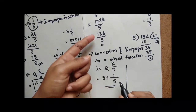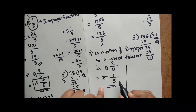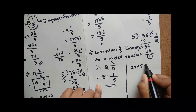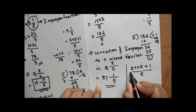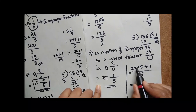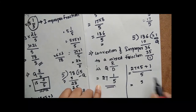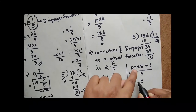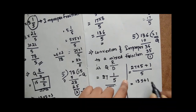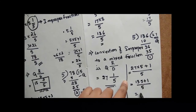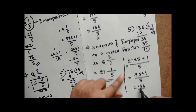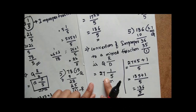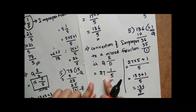I am verifying this answer is correct. 27⅕ means 27 into 5 plus 1 by 5 — that is 135 plus 1 by 5, which equals 136 by 5. Both answers are the same, because this mixed fraction is also a correct answer.